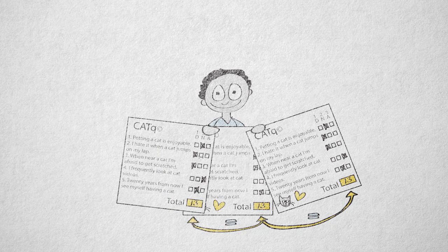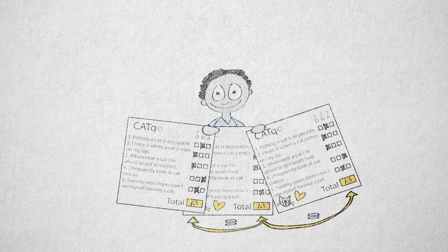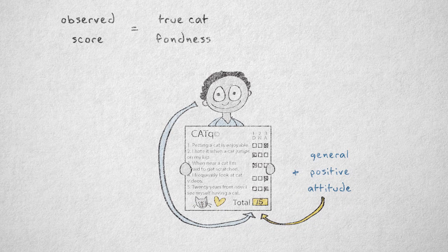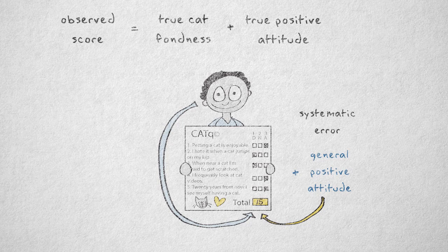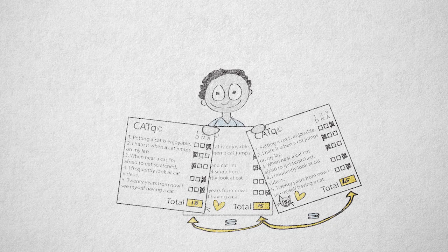But what if we systematically measure an additional construct? Take my cat fondness scale. What if these questions also tap into the construct general positive attitude? This could result in a systematically higher score for people with a positive attitude. We call this systematic error. This means our instrument is less valid, but not less reliable. As long as the observed score is determined only by the true score on cat fondness and the systematic error caused by the second construct, positive attitude, then we would still get the same observed score every time we measure the same person.